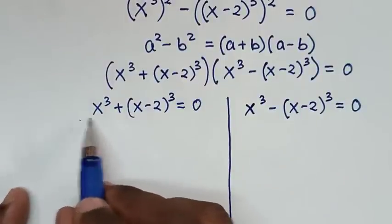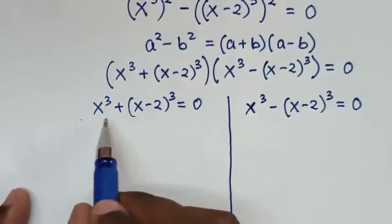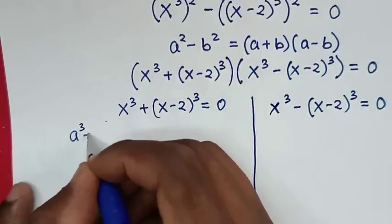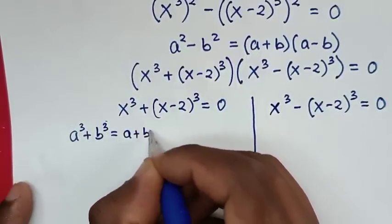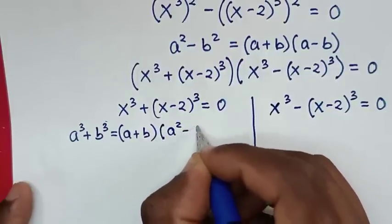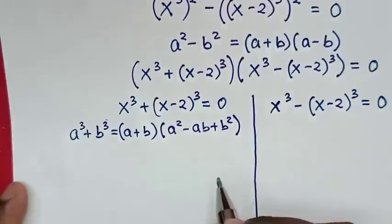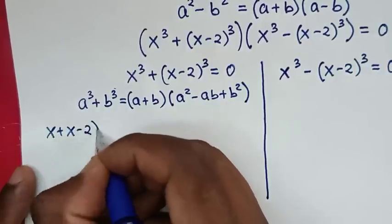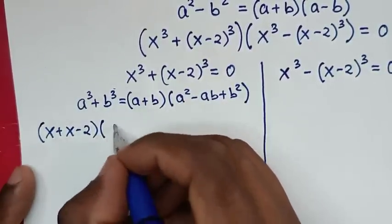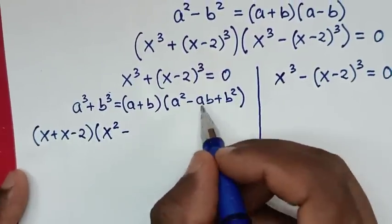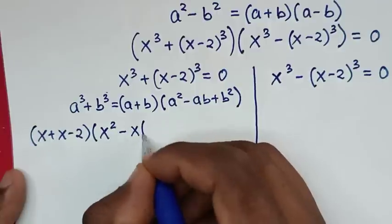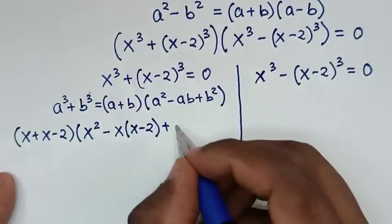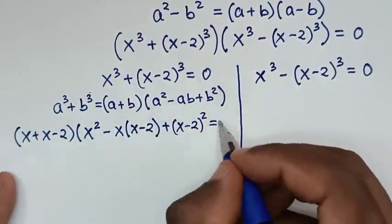From the first solution, x to the power of 3 plus x minus 2 bracket to the power of 3, the left side is in the form of a sum of cubes. We apply the rule: a cubed plus b cubed equals a plus b, bracket, times a squared minus ab plus b squared. So it becomes x plus x minus 2, bracket, times x squared minus x times x minus 2, bracket, plus x minus 2 bracket squared, equals 0.